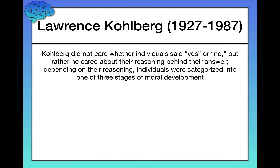These are called Kohlberg's moral stages of development, based on Lawrence Kohlberg's work. The key thing behind how he categorized people's moral reasoning is that he didn't care whether people said yes or no — rather, he cared about the reasoning behind their answer. What categorizes you within his system of three stages with two levels each — six levels total — depends entirely on your reasoning.